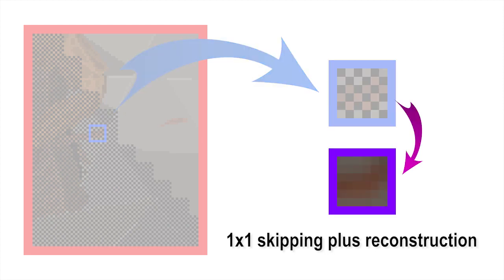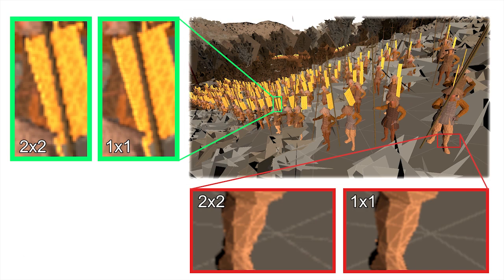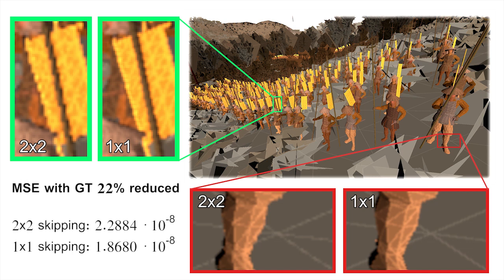With CURE, we are not restricted by quad shading and simply skip every other pixel in the image. This results in a higher fidelity output and even reduces the mean squared error of the final rendering.